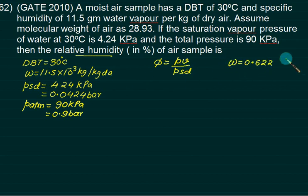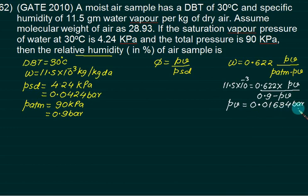What is W? It is 0.622 multiplied by PV divided by P atmospheric minus PV. Substitute this value and solve for PV first. You should get 0.01634 bar.